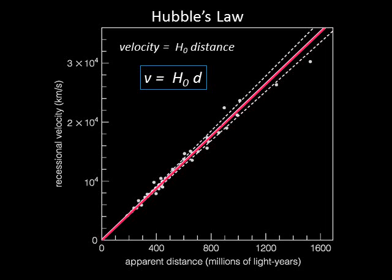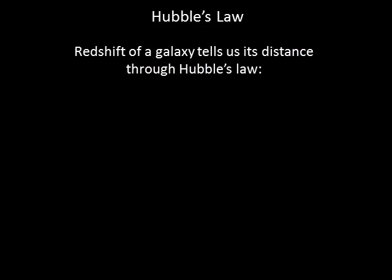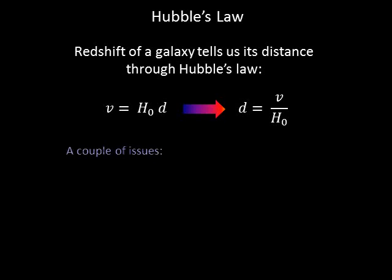You may recall that the slope of a line is rise over run. In this case, the rise is the change in velocity and the run is the change in distance. This means the slope, H naught, is in units of velocity over distance — here the units are kilometers per second per million light-years. We can use Hubble's Law to estimate the distance to other galaxies; all we need to do is measure the recessional velocity using the Doppler technique, and the distance is the velocity divided by Hubble's constant.